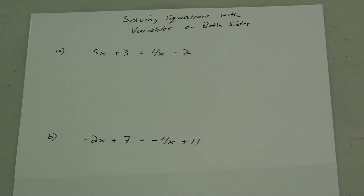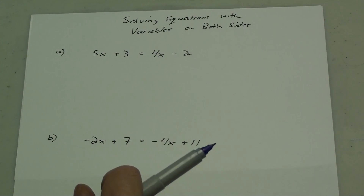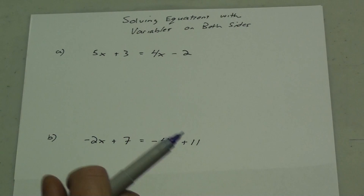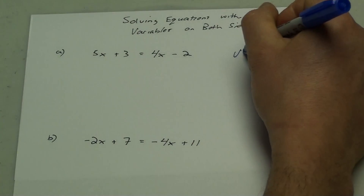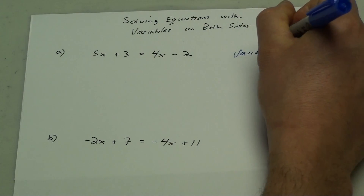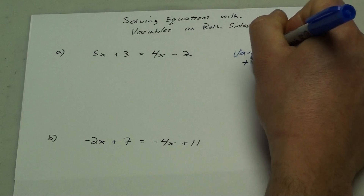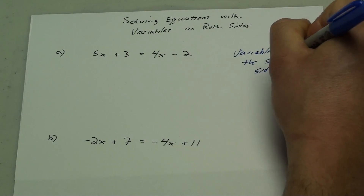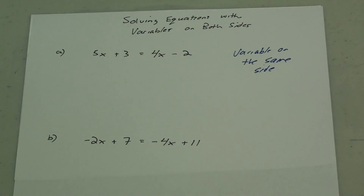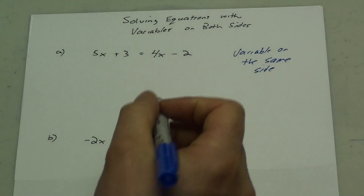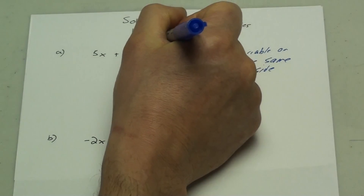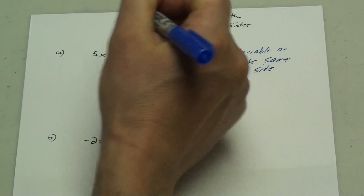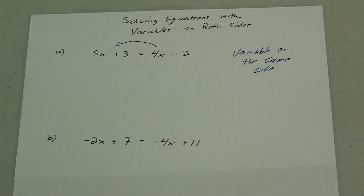This is a lesson on how to solve equations with variables on both sides. What I want to do is get my variables on the same side. I want to move things around, so I need to move this 4x over to join it with the 5x.